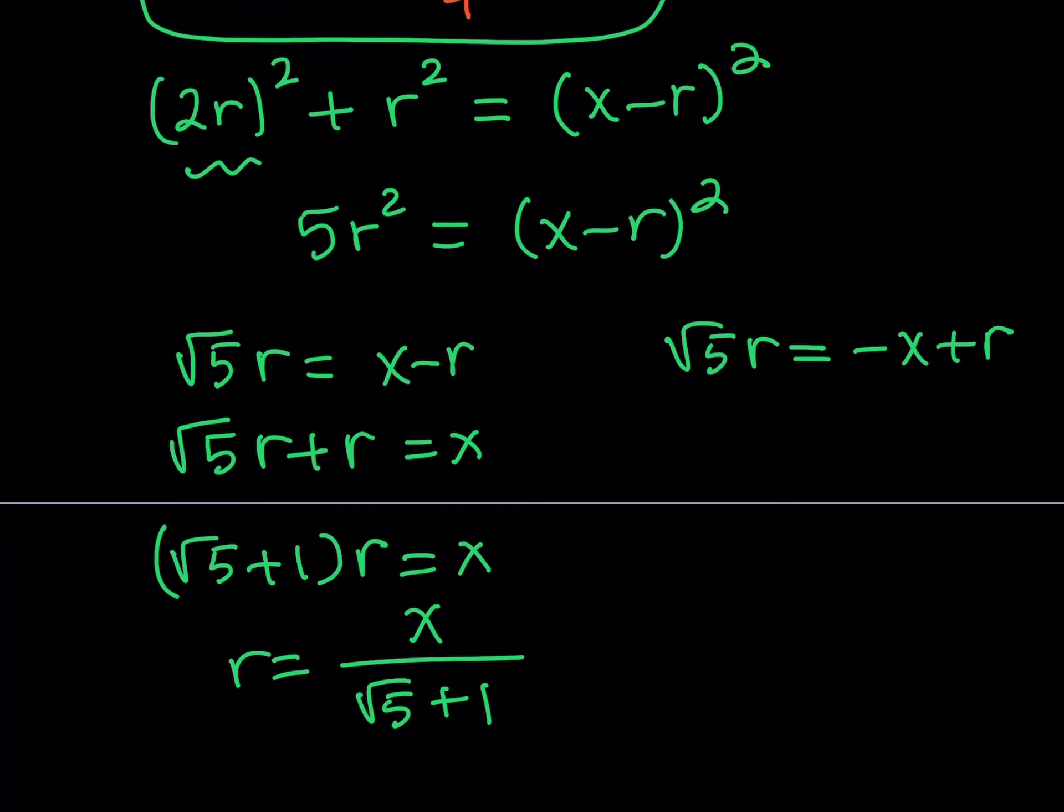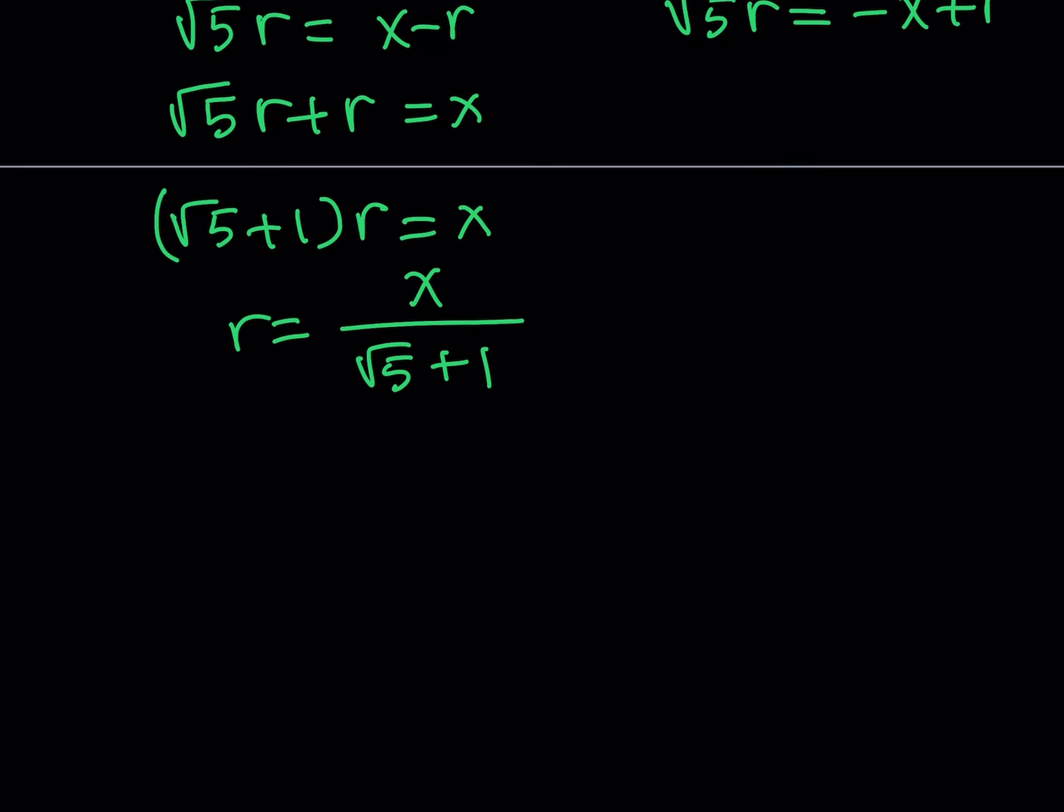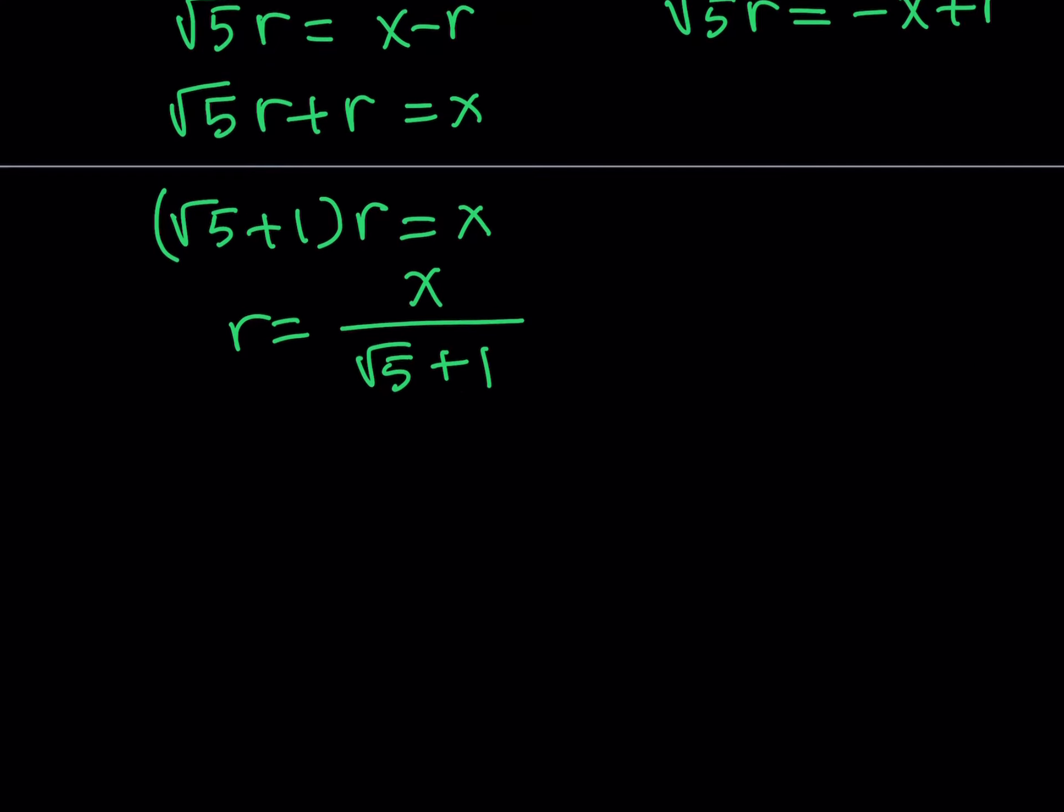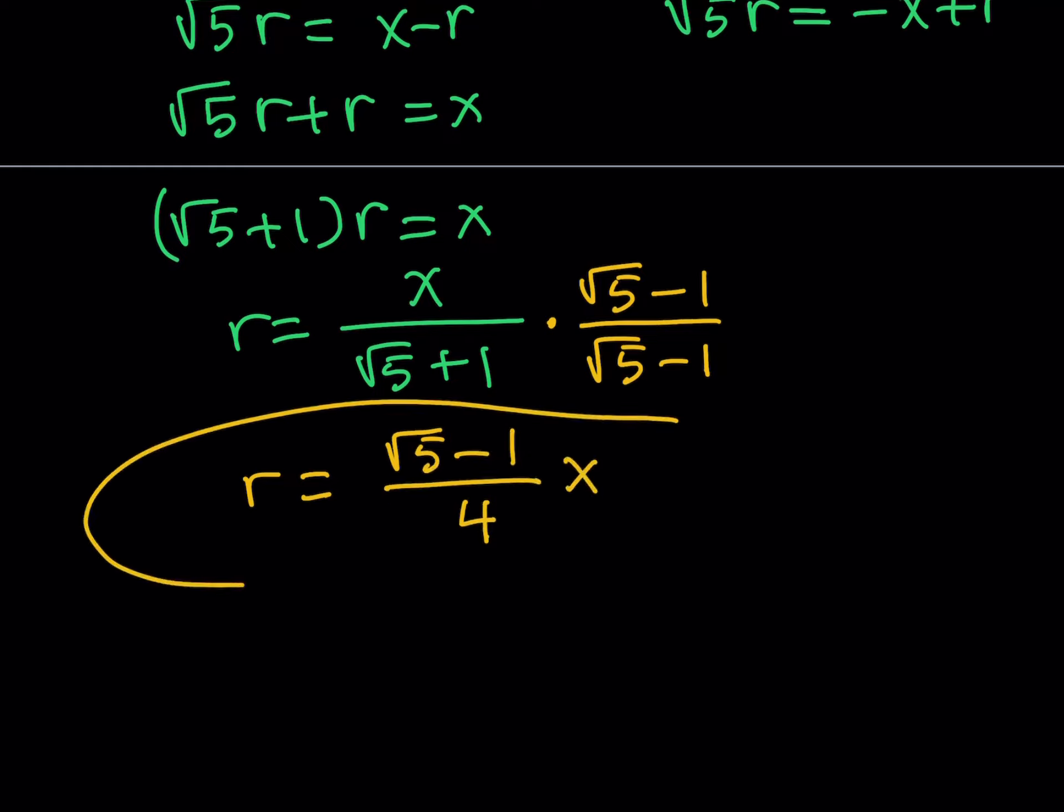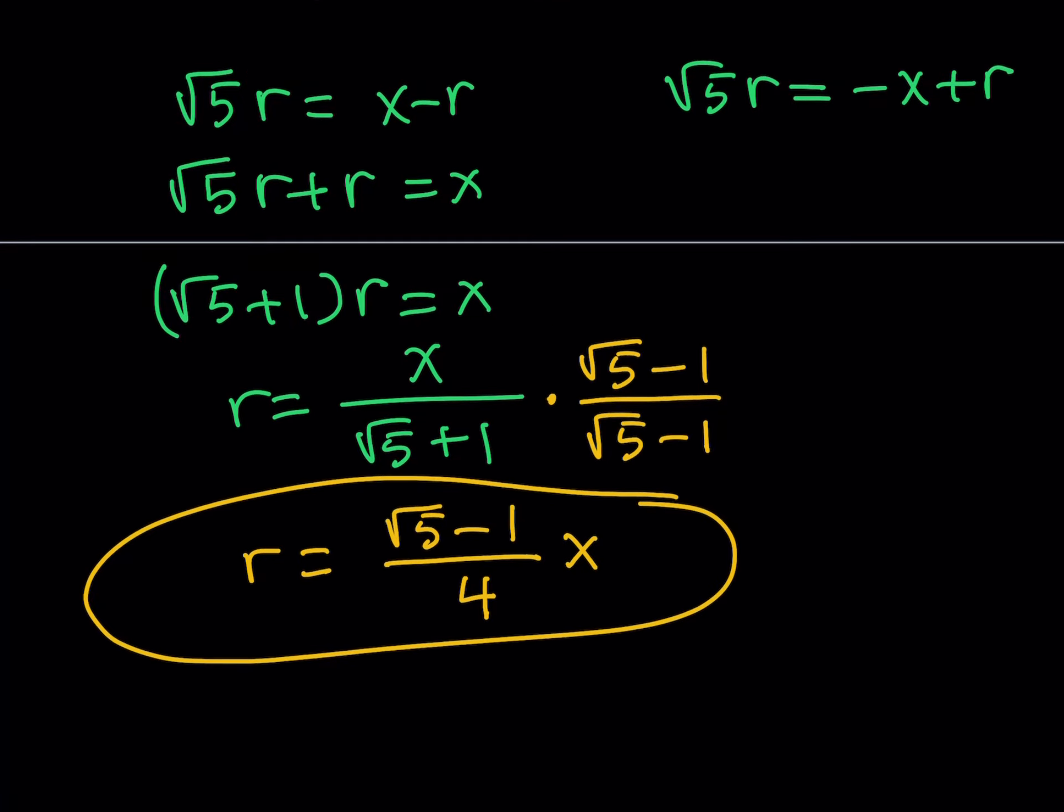I would like to rationalize the denominator. I can multiply the top and the bottom by root 5 minus 1 and root 5 minus 1. This is going to give me the same answer, which is square root of 5 minus 1 over 4 multiply by x. If you use the other solution, you would get something like r minus root 5r. But notice that root 5r is greater than r. So you're going to be getting a negative quantity. So that solution will be rejected.